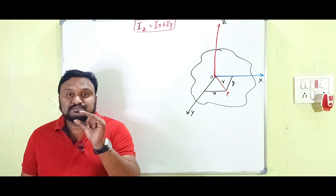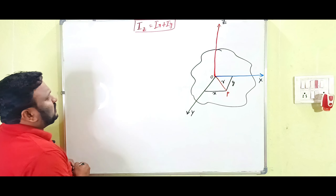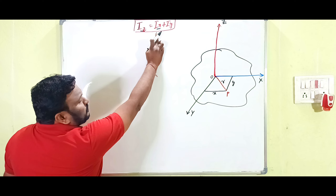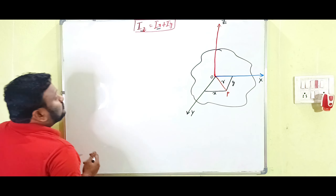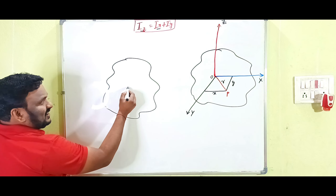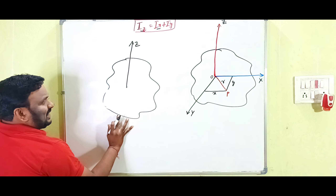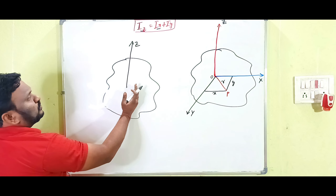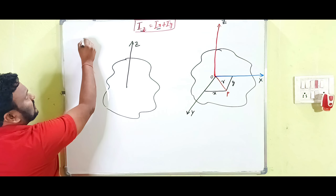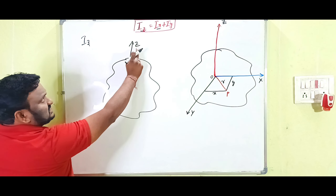If we can prove that I_Z equals I_X plus I_Y, then the perpendicular axis theorem is automatically proved. Here I_Z is the moment of inertia with respect to the Z-axis, I_X is the moment of inertia with respect to the X-axis, and I_Y is the moment of inertia with respect to the Y-axis.